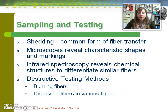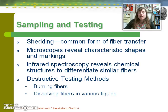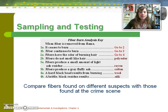Microscopes can be helpful in analysis to reveal shapes and markings. Infrared spectroscopy can also help reveal chemical structures and differentiate fibers that look superficially very similar. There are also some destructive testing methods including burning, which would obviously destroy your evidence — it's a one-time thing.